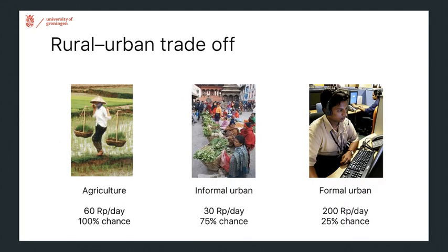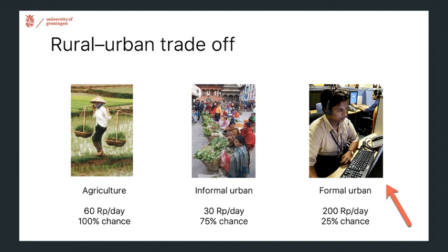The second version can best be illustrated in the following way. We have our agricultural worker on the rice paddies earning 60 rupees a day — that's given because they currently have that job. If they move to the city, ideally they land a cushy call center job at an income of 200 rupees per day, but there's only a one-in-four chance of actually getting this high-paying job.